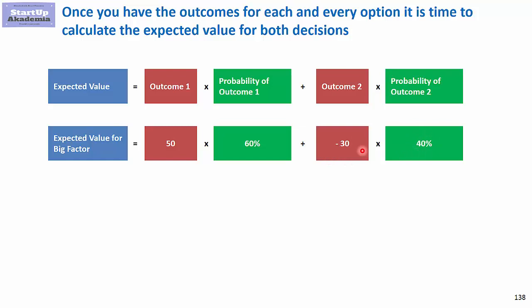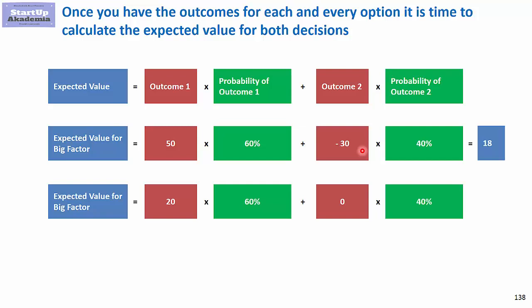So for the big factory the expected value is 18 million. In the same way we calculate the small factory, which gives us 12 million.